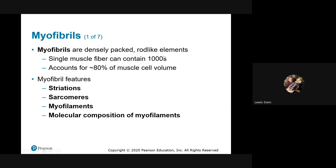Myofibrils are densely packed rod-like structures — thousands of them, making up about 80 percent of the cell's volume — and you'll see their striations shortly. The sarcomere is the individual repeat unit: what one sarcomere does, the next one does in sequence. The filaments, particularly actin and myosin, have different shapes. Myosin is like a stick with heads; I don't have an easy mnemonic for that one — can't have a magic formula for everything.